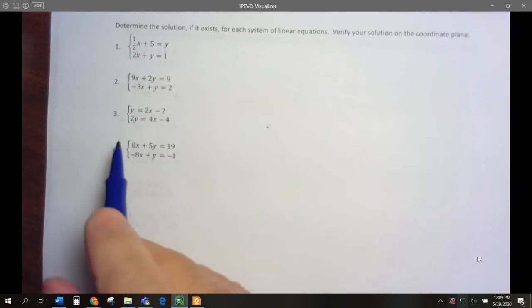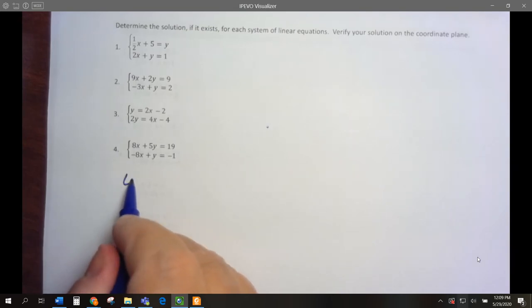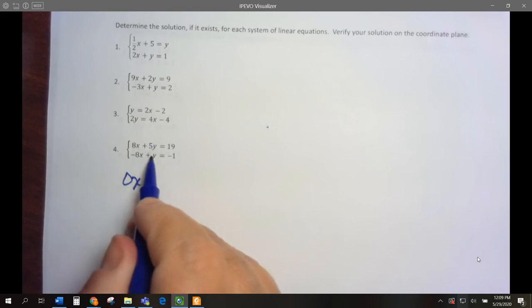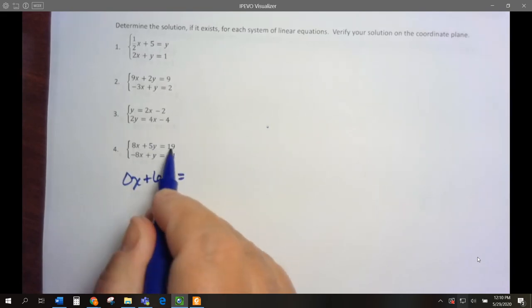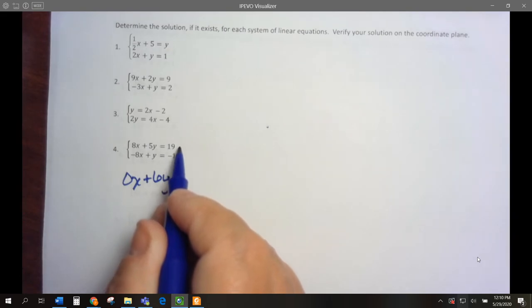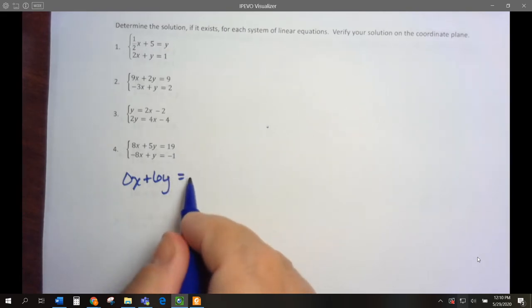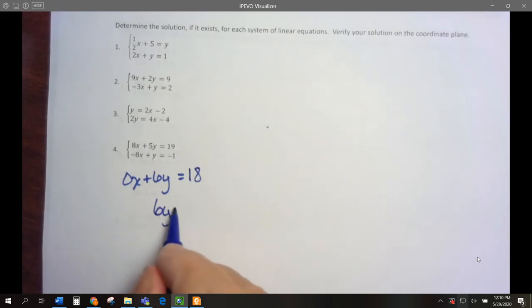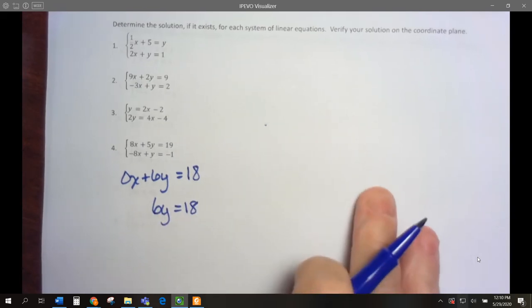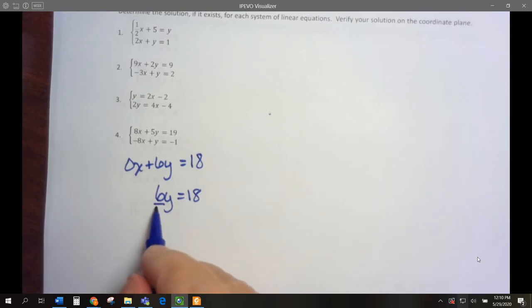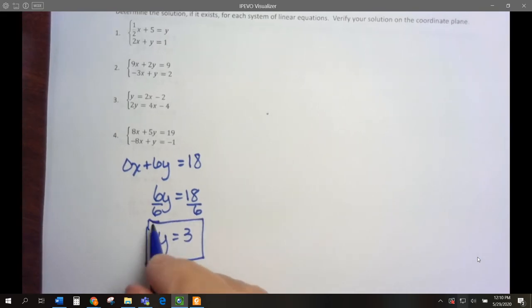We have 8x minus 8x, that's 0x. Then 5y plus another y gives us 6y. And 19 plus negative 1, so we're going to start at 19, go down 1, we have 18. So 6y equals 18. We divide by 6 on both sides, and 18 divided by 6 is 3. So y equals 3.